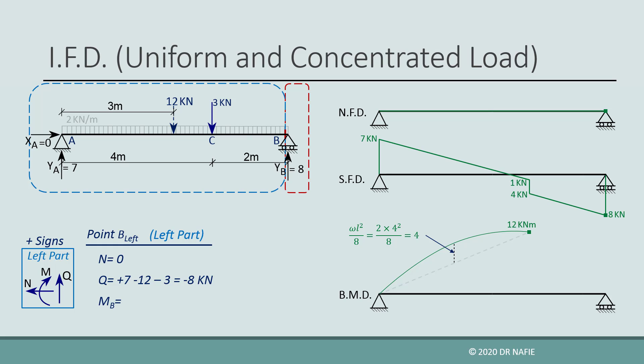The value of the moment will be calculated by taking the moment of all the forces in the left part about point B. The left part contains three forces: yA multiplied by an arm of 6 meters in the positive direction, the 12 kilonewton equivalent force multiplied by an arm of 3 meters in the negative direction, and the 3 kilonewton concentrated force multiplied by an arm of 2 meters in the negative direction. The resulting moment about B will be 0 as expected, which can be easily concluded by working on the right part.